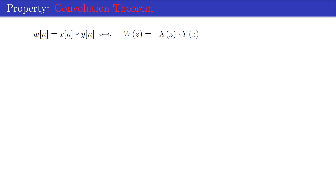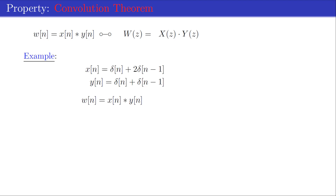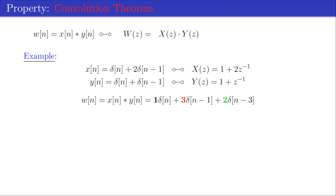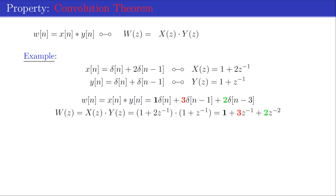This convolution theorem is illustrated with an example where both x[n] and y[n] are finite-length sequences. The convolution result w[n] is a finite-length sequence consisting of three delta pulses with coefficients 1, 3, and 2. The z-transforms X(z) and Y(z) are finite-length polynomials, and multiplying them yields a polynomial with coefficients 1, 3, and 2 — the z-transform of w[n].